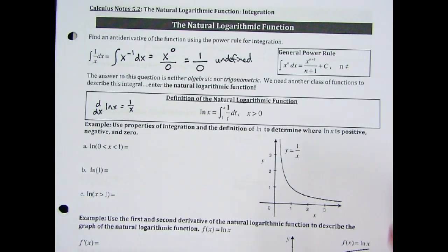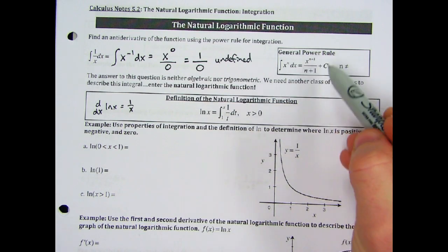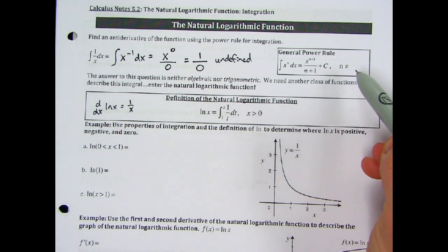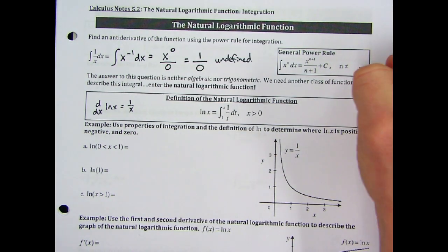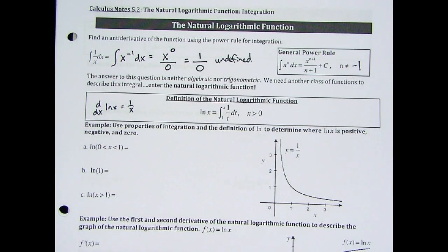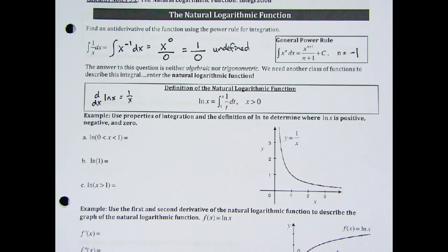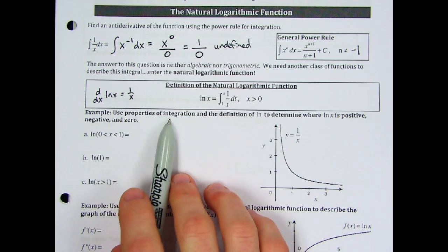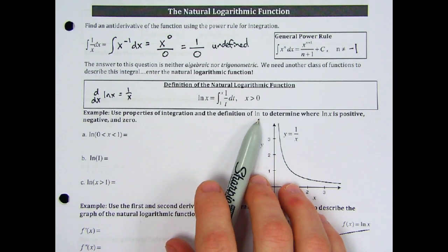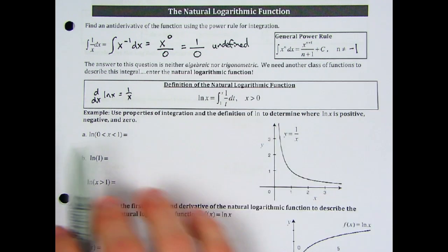One other thing about the power rule: we defined it as adding 1 to the exponent and dividing, but we add the stipulation that n cannot equal negative 1. So the power rule does not work when n equals negative 1. What we're going to do now is look at the properties of integration and the definition of natural log to determine where the natural log function is positive, negative, and zero.